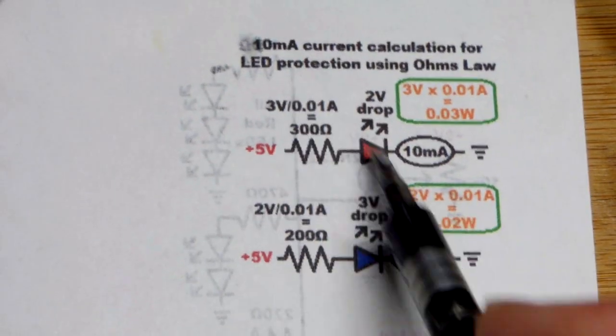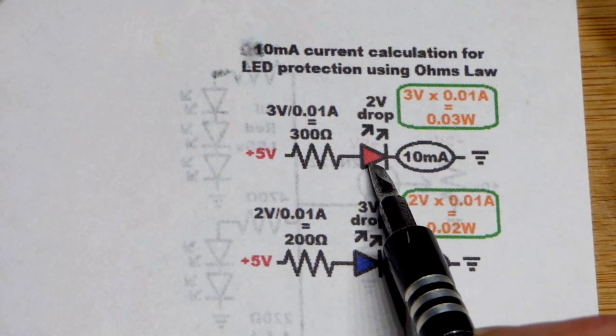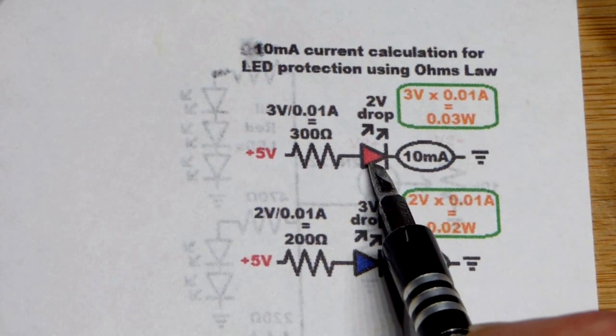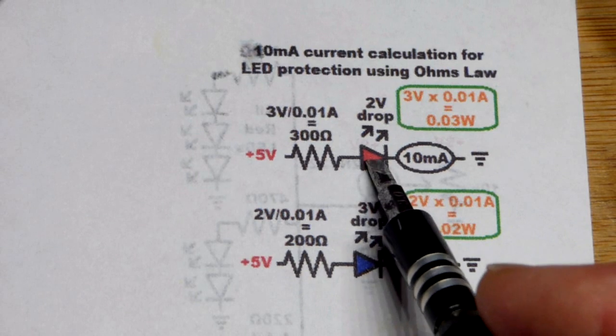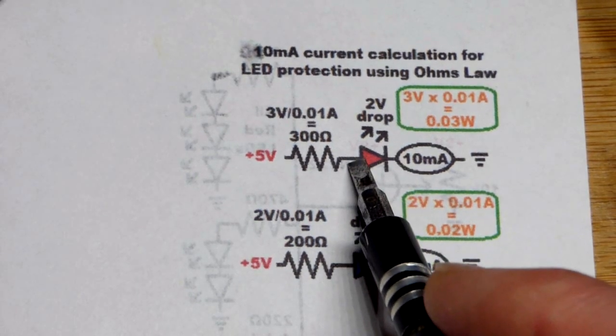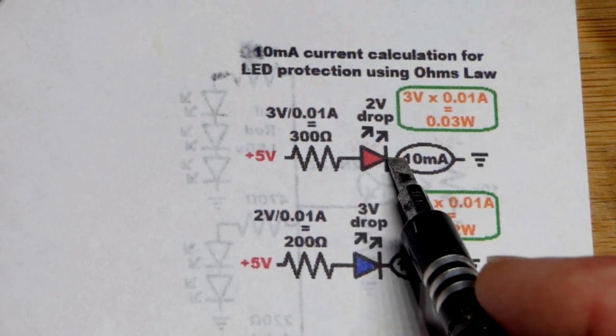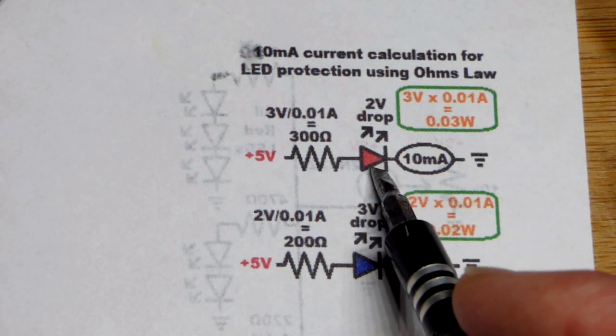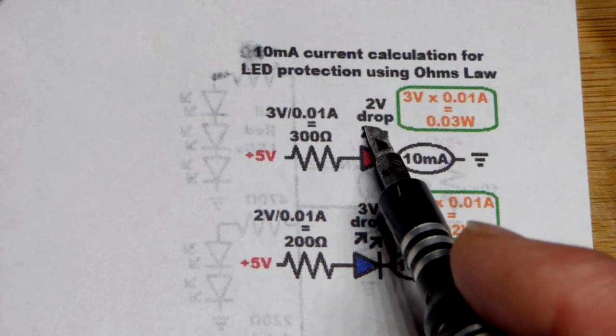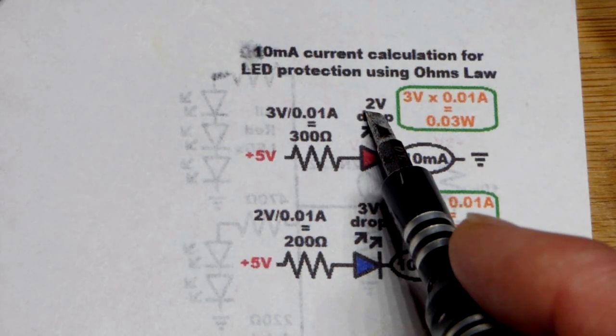We can do some calculations to see how circuits like that are going to behave. So we have the red LED on top right here. Red LEDs, the indicator LEDs that commonly come with kits, they tend to have a forward voltage of 2 volts, which means you need about 2 volts before any current will even start flowing through it.